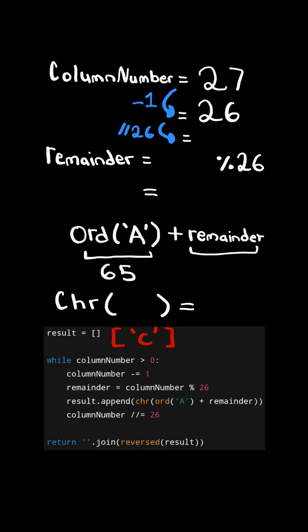We subtract one. We calculate the remainder. In this case, it's zero. We take the ASCII value of A and add it to the remainder, and convert that ASCII number back into a character. In this case, the character is A, and so we append A to the list.